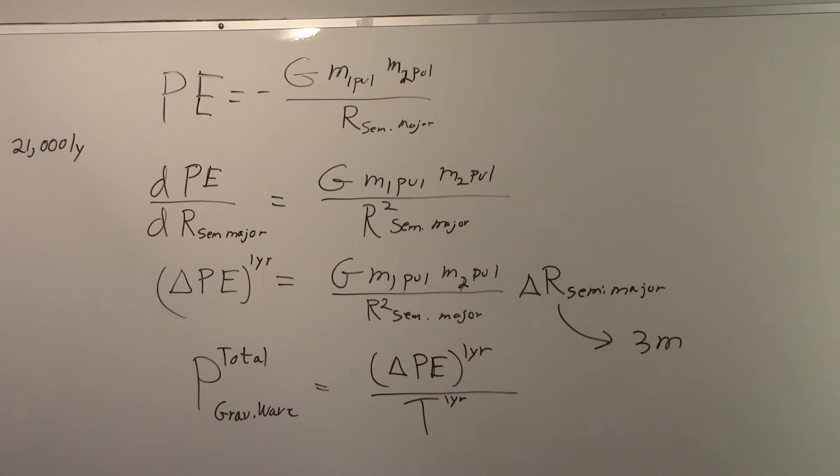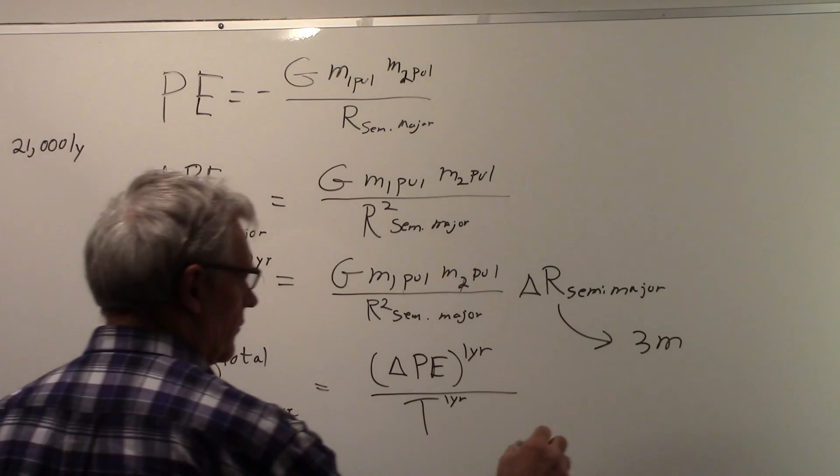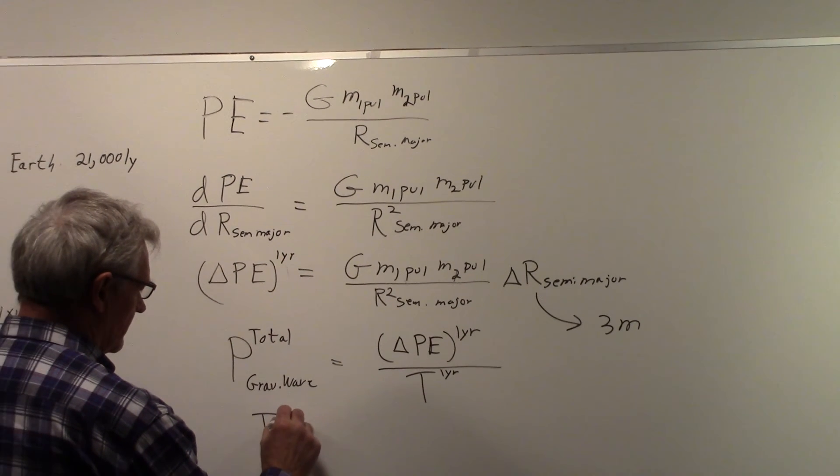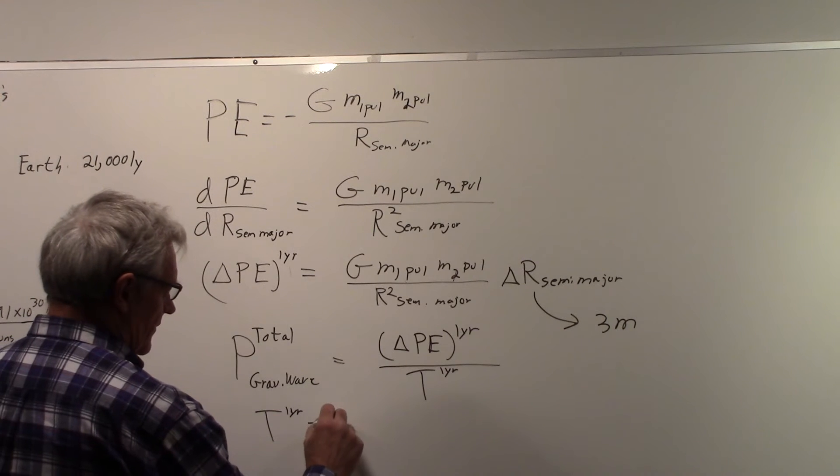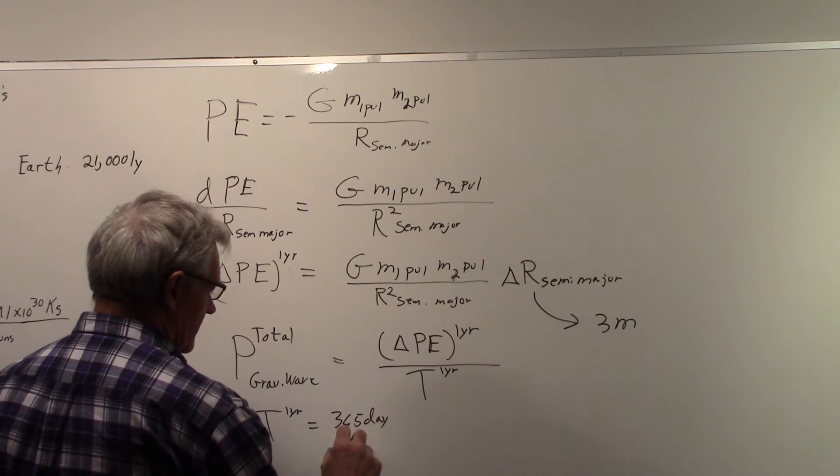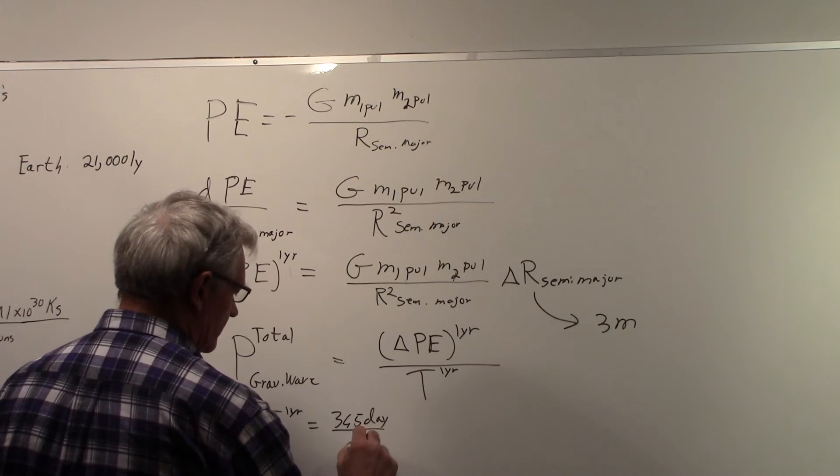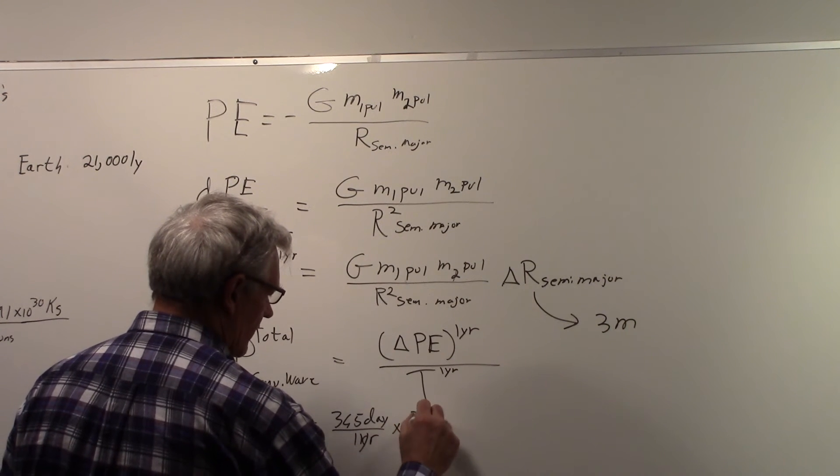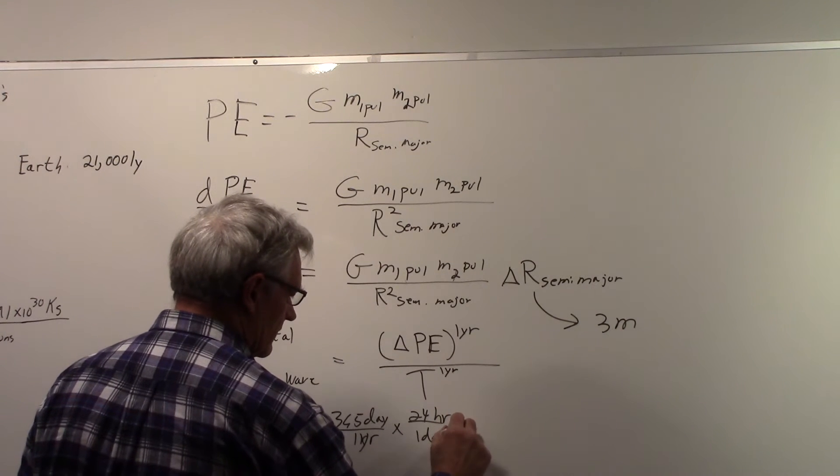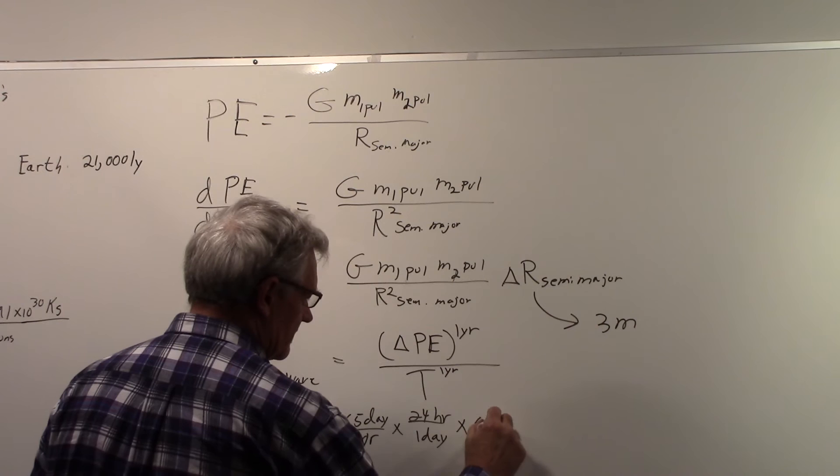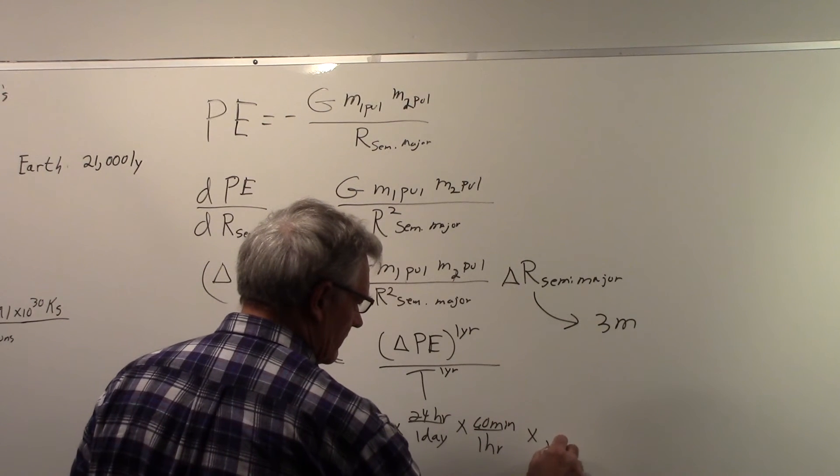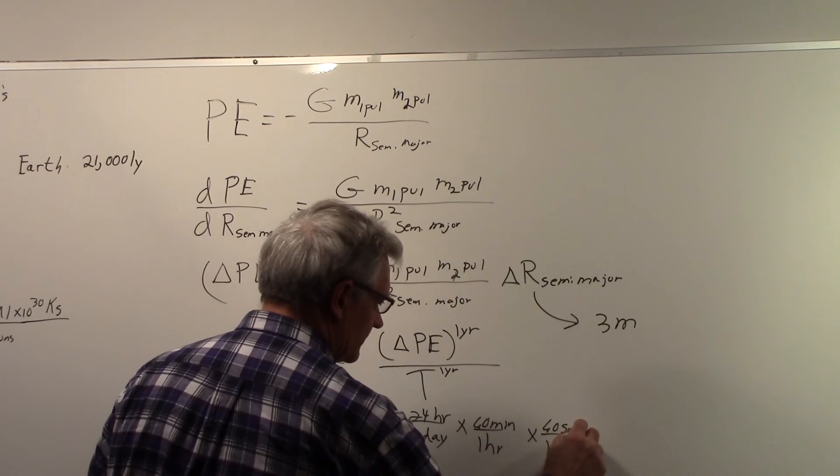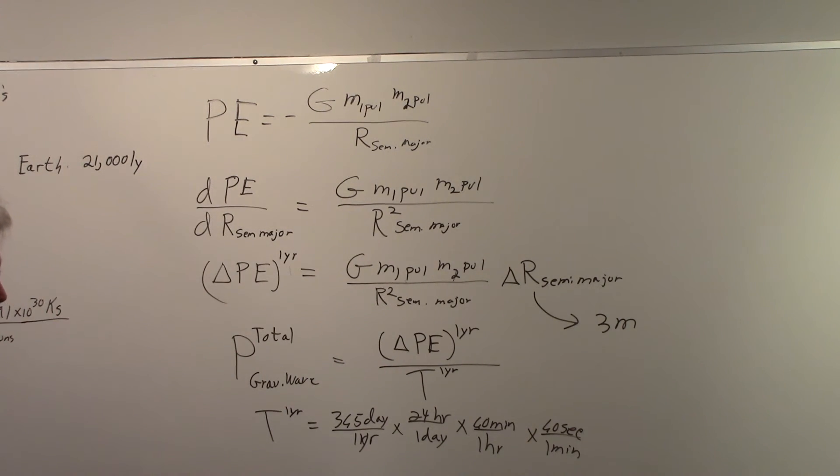And then if we divide by time of one year, we can find out what the total power is that's generated. So if we substitute in these numbers, and what we need is the time for the one year, if we convert that to seconds, we've got 365 days per year. And one day has 24 hours. And one hour has 60 minutes. And one minute has 60 seconds. So we convert the one year to seconds.